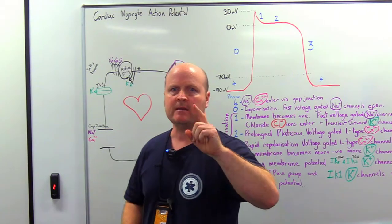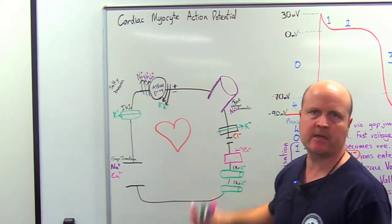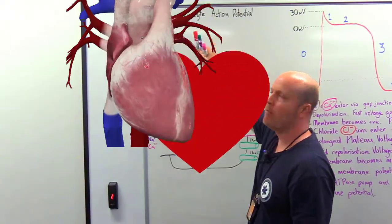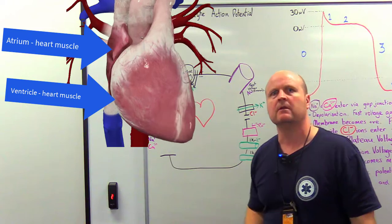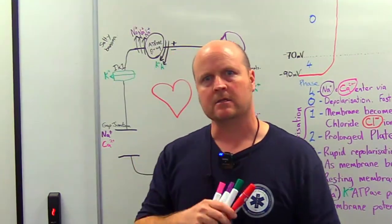Kia ora team, my name is Ben and let's go through the cardiac myocyte action potential. So cardiac means heart, myocyte, myo means muscle, cyte is cell. So an action potential is the message telling a muscle to contract. How is this going to work?